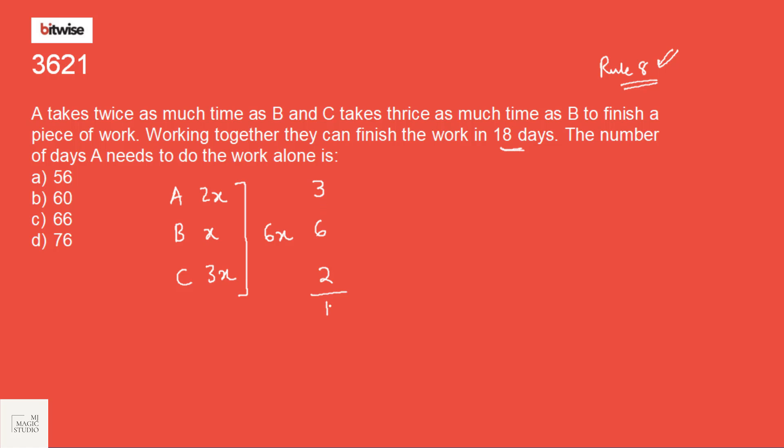So if we add this, we will get 11. That means A, B and C together will take 6X by 11 days to complete the work, which is equivalent to 18 days as given in the sum. On solving, we get X is equal to 33 days. The number of days A needs to do the work alone is 2X. So 2X is 66. A will take 66 days to complete this work. Option C is the pick. Please go through rule 8, the CM rule to dwell deeper into this concepts.